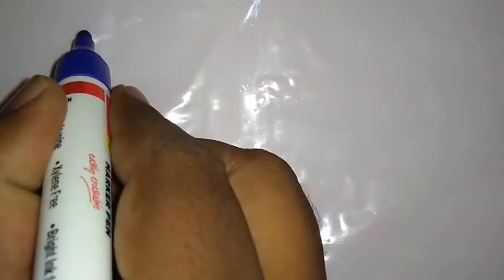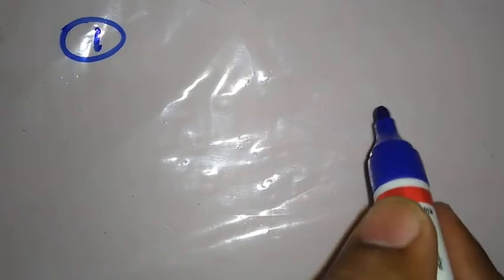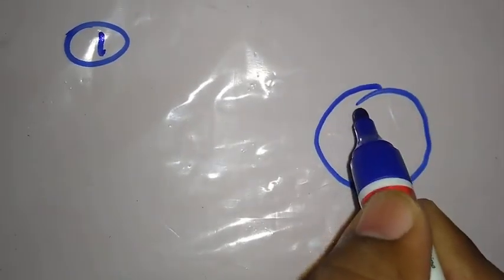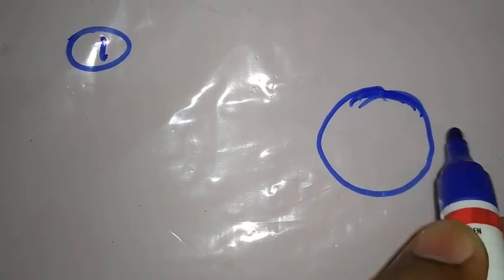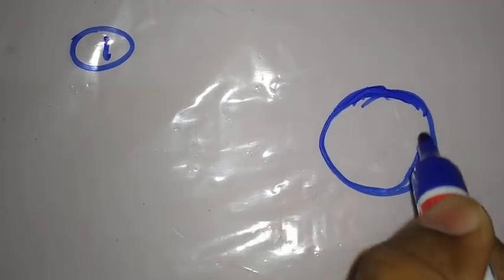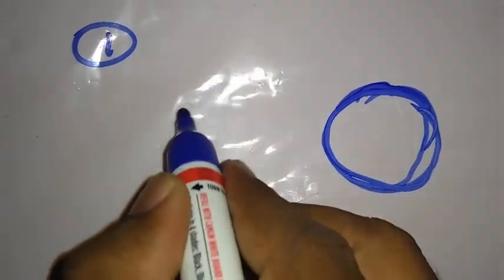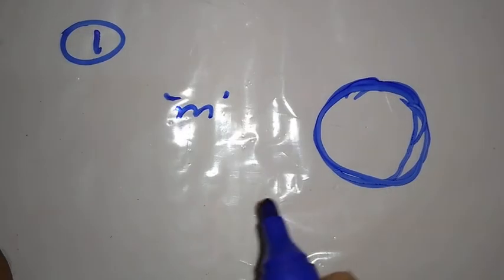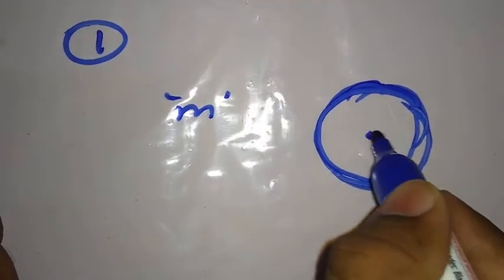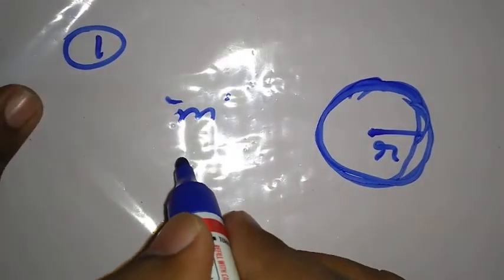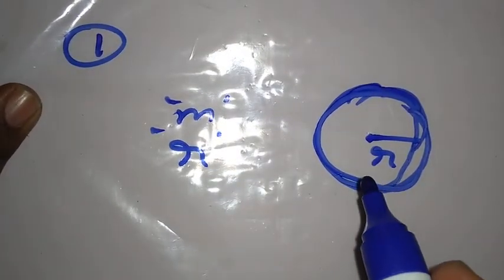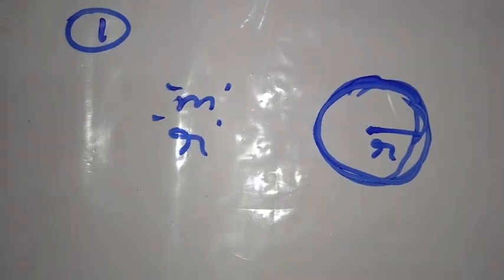The magnetic field at the center of a circular coil of m turns and radius r carrying a current of i is given by. What is a circular coil? A circular coil having m number of turns, of radius r, and carrying a current of i.